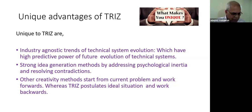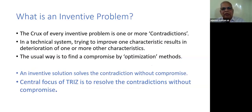What is an inventive problem? The crux of every inventive problem is one or more contradictions. In a technical system, trying to improve one characteristic results in deterioration of one or more other characteristics. The usual way is to find a compromise by optimization method. TRIZ says this is suboptimal. An inventive solution solves the contradiction without compromise. The central focus of TRIZ is to resolve contradictions without compromise.